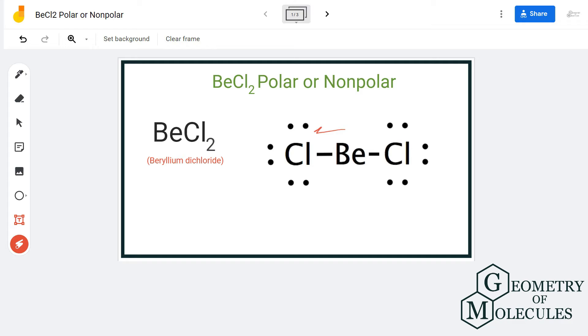Here, the chlorine atom is more electronegative than the beryllium atom, as it has an electronegativity value of 3.16, and the electronegativity value for beryllium is 1.57.